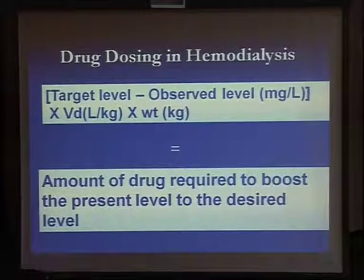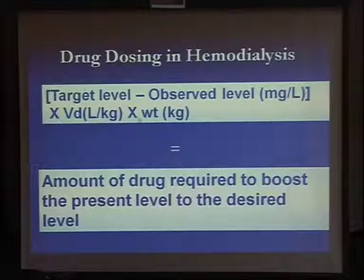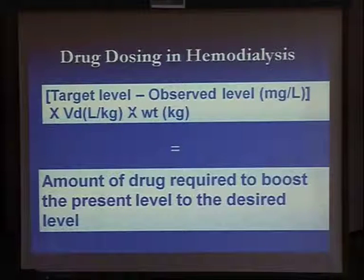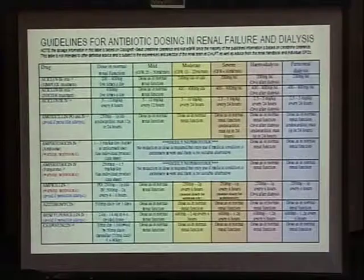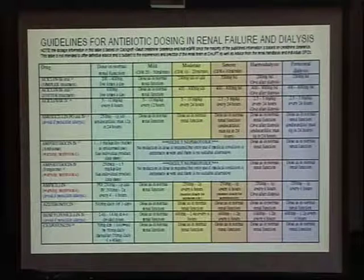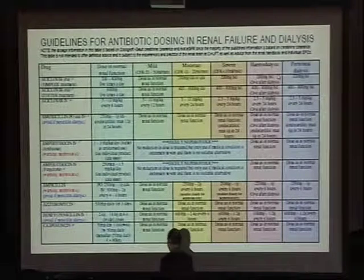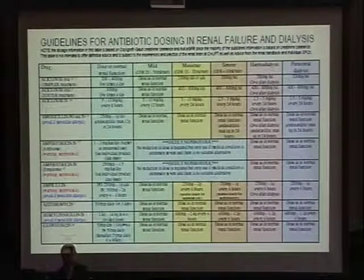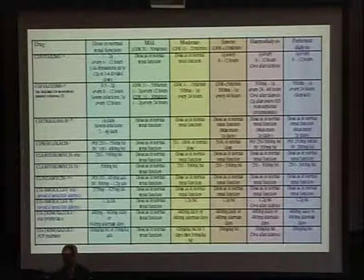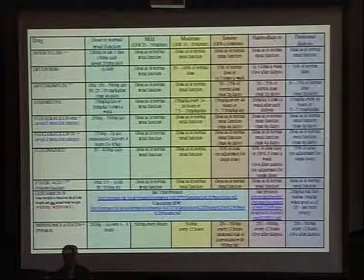If the patient is on hemodialysis, you want to calculate the amount of drug required to boost the present level to the desired level. You subtract the observed level from the target level and multiply by the volume of distribution and the weight of the patient. In practice, you can refer to guidelines that show, for antibiotic dosing examples, what to do at clearances of 20–50, 10–20, or less than 10 ml/min, and what to do when the patient is on hemodialysis or peritoneal dialysis. In peritoneal dialysis, there is little drug removal. These tables tell you exactly what dose to use and what supplementary dose is needed post-dialysis.